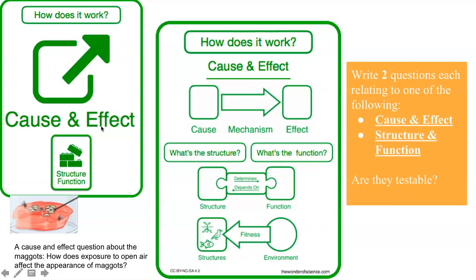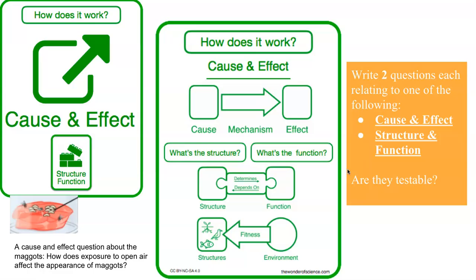Another cross-cutting concept is cause and effect — this is about mechanism and explanation. Events have causes, sometimes simple, sometimes complicated. A major activity of science is investigating and explaining causal relationships and the mechanisms by which they are mediated. Such mechanisms can then be tested across given contexts and used to predict and explain events in new contexts. How does it work? What is the cause and effect? What is the structure? What's the function? We can also ask about structure and function. The way in which an object or living thing is shaped and its substructure determine many of its properties and function. Pause the movie and write down two questions — one for cause and effect and one for structure and function regarding COVID-19 — and reflect: are they testable questions?